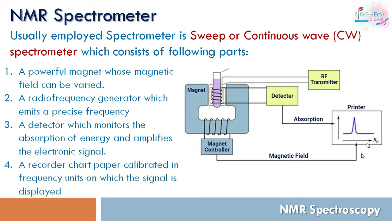The fourth component is the recorder, which displays the spectrum. These four components — the powerful magnet, RF generator, detector, and recorder — are the main components of the NMR spectrometer.